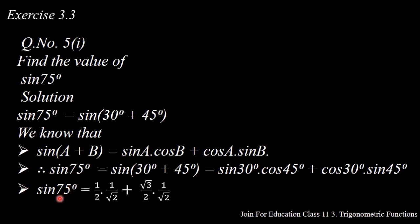Therefore, sin 75 degrees equals — now putting in the values: sin 30 degrees equals 1/2, cos 45 degrees equals 1/√2, plus cos 30 degrees equals √3/2, into sin 45 degrees equals 1/√2.